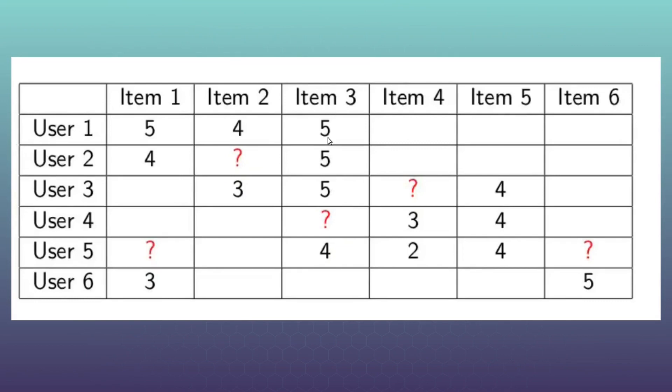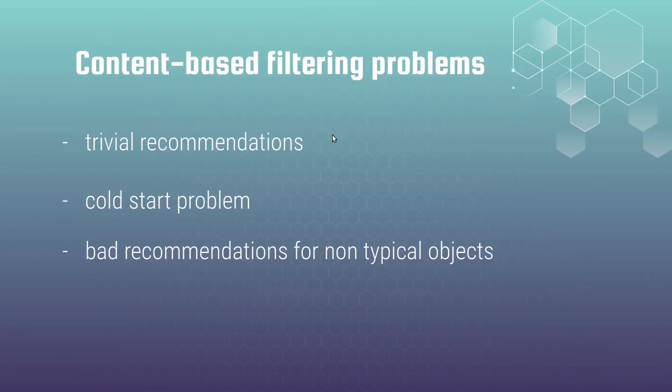Content-based filtering is not perfect either. The problems here are: trivial recommendations again, the cold start problem is the same, and bad recommendations for non-typical objects.